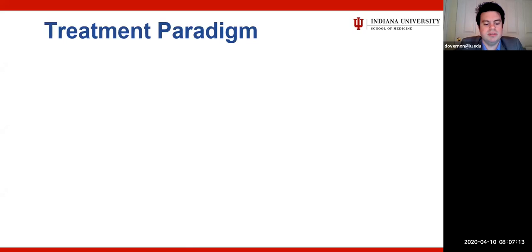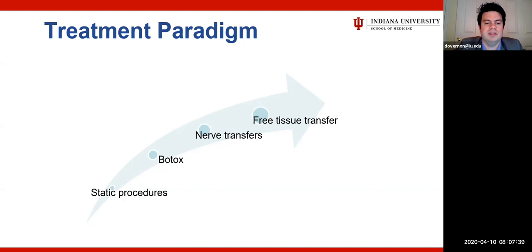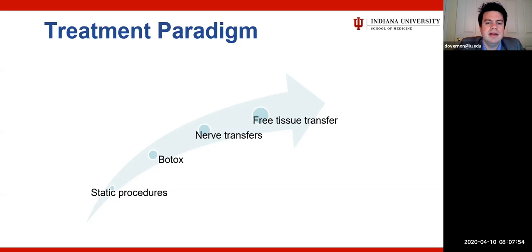Our treatment paradigm has evolved significantly over the last decade. We started with static procedures — brow lifts, mid-face lifts, static slings — then realized Botox was increasingly important for both complete and incomplete paralysis. Next came nerve transfers: 5-7 transfers or hypoglossal transfers for complete paralysis, and then the Cadillac surgery of free tissue transfer with gracilis free flaps. Our options have really expanded, but we still need to think of incomplete facial paralysis as a distinct and separate category from complete paralysis.